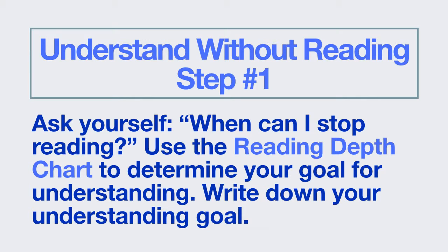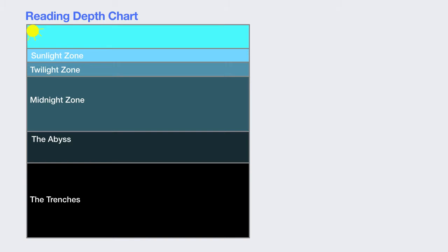The reading depth chart uses the metaphor of the levels of the ocean. The ocean has different levels or zones or depths. The highest zone, closest to the surface, is called the sunlight zone because sunlight can get through. Then just beneath that is the twilight zone. Then the midnight zone, which is the biggest zone. Then the abyss — sounds kind of scary — and then the trenches.